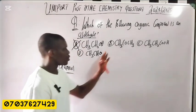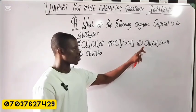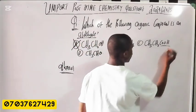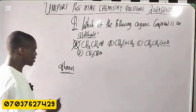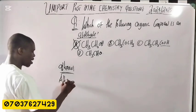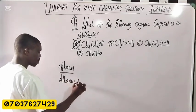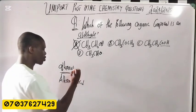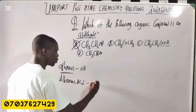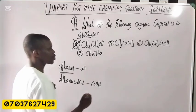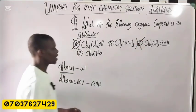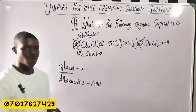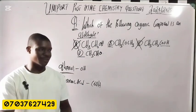Now let's move to another option. Here we have -COOH. When you see -COOH, that is a carboxylic acid — it is a carboxylic acid. So these two options with -OH and -COOH are not aldehydes. Now B and D are the possible answers.